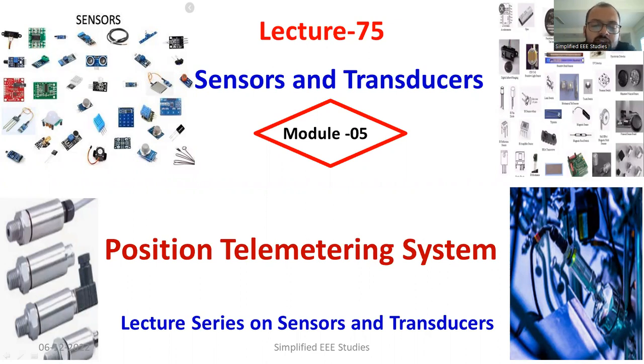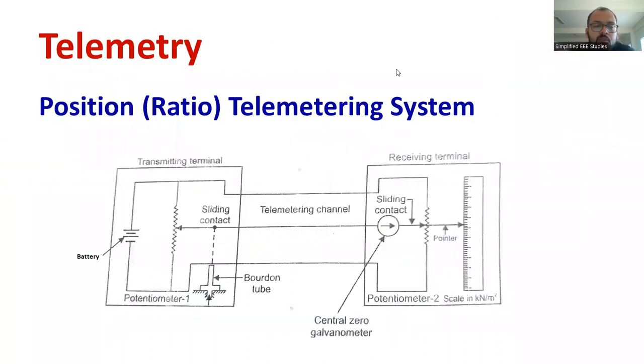Position telemetering system is also known as ratio telemetering system. First, let's understand the schematic diagram of position telemetering system. As you can observe, we have two segments. The first one is called a transmitting terminal and another segment is known as receiving terminal.